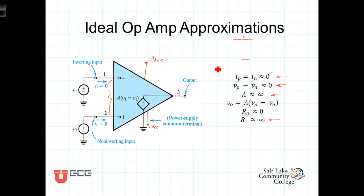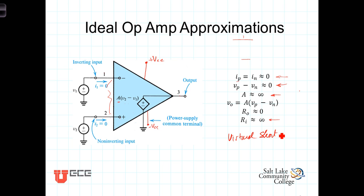The ideal op-amp approximation that the voltage at the non-inverting terminal and the voltage at the inverting terminal are so close to each other that we can call them equal — that V2 minus V1 equals zero — means that V sub N, the voltage at the inverting terminal, is the same as the voltage at the non-inverting terminal. This is referred to as a virtual short. It's virtual in that there's no current flowing between those two terminals — we're saying the current going into both terminals is zero — but the voltage across them is so small that we say there's effectively a short between those two terminals.